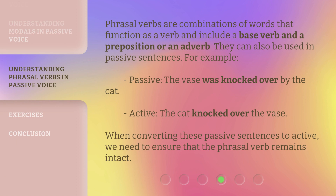Phrasal verbs are combinations of words that function as a verb and include a base verb and a preposition or an adverb. They can also be used in passive sentences. For example — passive: the vase was knocked over by the cat. Active: the cat knocked over the vase. When converting these passive sentences to active, we need to ensure that the phrasal verb remains intact.